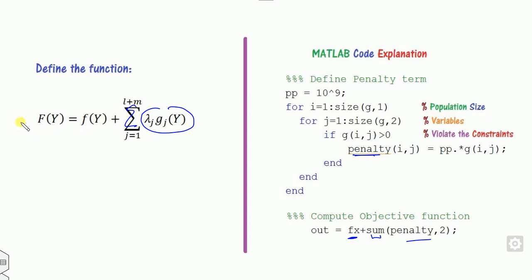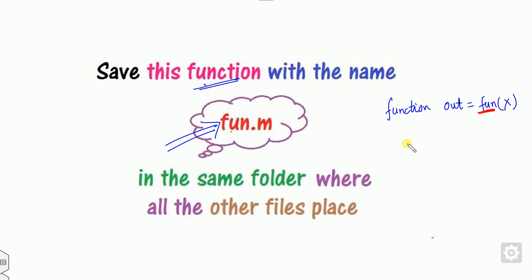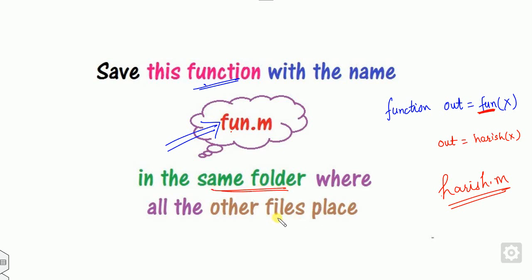Save this function with the name fun.m, because the code starts with 'function out = fun'. If instead you write 'harish(x)', save the file as harish.m. Place this file in the same folder as your other algorithm files, such as the PSO or ABC MATLAB code.